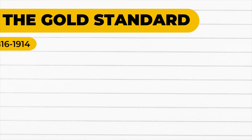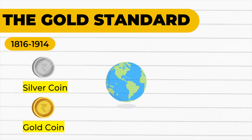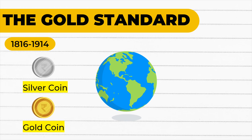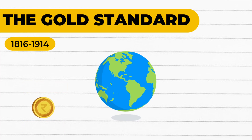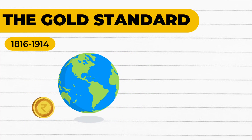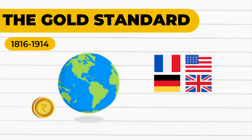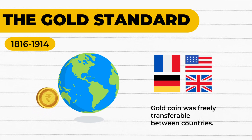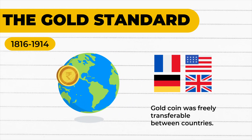Number 2: The gold standard era. The gold standard involved buying and selling of paper currency in exchange for gold at the request of any individual or firm. In this system, gold is freely transferable between countries. Participants in that system included the UK, France, Germany, and the USA. Each currency was linked to a weight of gold.